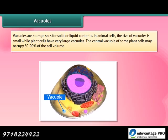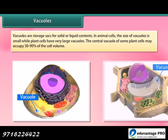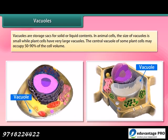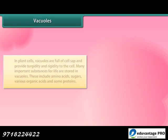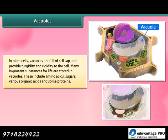Vacuoles: Vacuoles are storage sacks for solid or liquid contents. In animal cells the size of vacuoles is small, while plant cells have very large vacuoles. The central vacuole of some plant cells may occupy 50 to 90% of the cell volume. In plant cells, vacuoles are full of cell sap and provide turgidity and rigidity to the cell. Many important substances for life are stored in vacuoles.